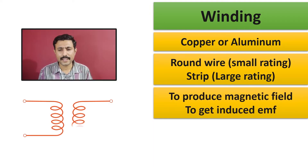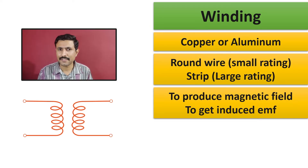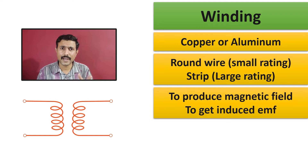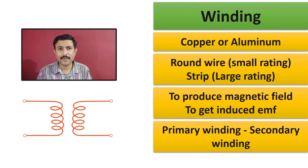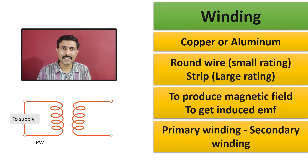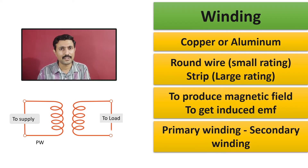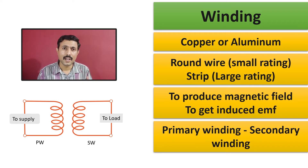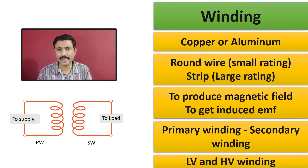The purpose of this winding is to produce magnetic field and to get induced EMF. The purpose of primary winding is to produce magnetic field and the purpose of secondary winding is to induce EMF in it. The winding which is connected to the source is known as the primary winding, and the winding which is connected to the load is known as the secondary winding. There are also two more names: low voltage winding and high voltage winding.